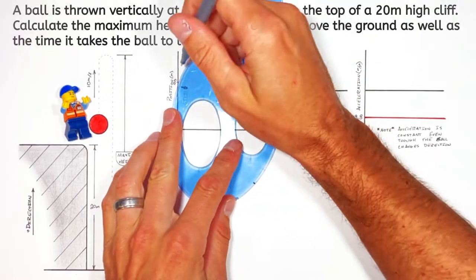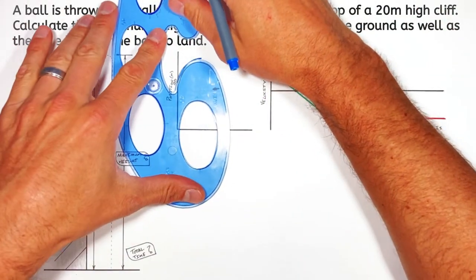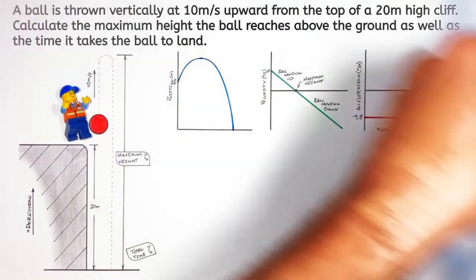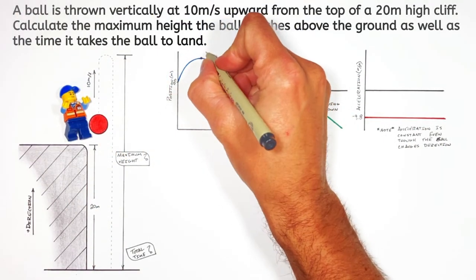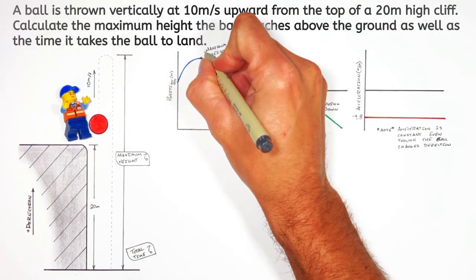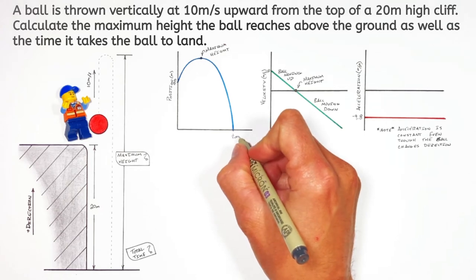So we know the ball is going to go up and then come back down. And on our position versus time graph, that's going to look like a parabola. And right here on our position versus time graph, you can see both the maximum height as well as the total time the ball is going to spend in the air.